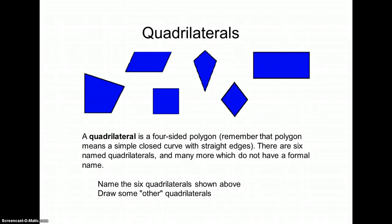So a quadrilateral is simple, closed, curved with four straight edges. There are six types of quadrilaterals that are named, and many more which don't have a formal name. Name the six quadrilaterals shown above. Can you draw two other quadrilaterals?